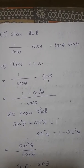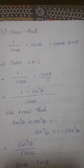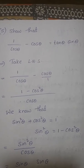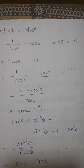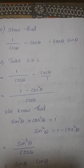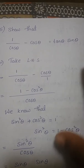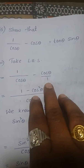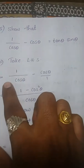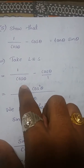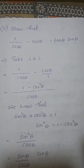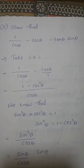So that is LHS: 1/cosθ − cosθ. Now cosθ can be written as cosθ/1, since there is nothing in the denominator we can write 1. So here the LCM is cosθ.